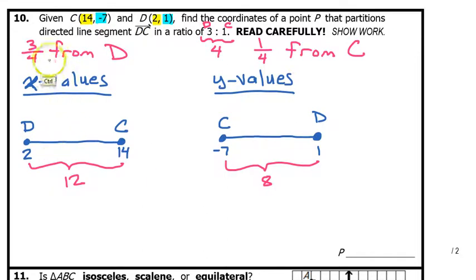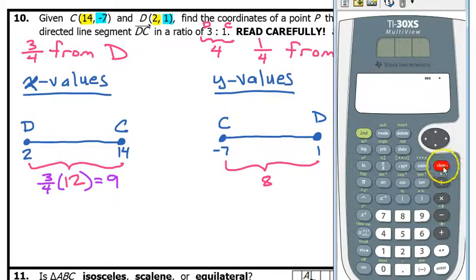Now, it's time for me to choose which fraction I'm going to use. I always like to go from left to right. So, for the x values, I'm going to go from D. For that reason, I'm going to use the 3 fourths. So, I want to go 3 fourths of the way. That means I need to go 3 fourths of 12. So, I need to figure out what that is. Now, I can do this in my head because 4 goes into 12 3 times, and 3 times 3 is 9. If you're not comfortable with that, then you will use a calculator and do 3 fourths times 12, and you'll get 9.